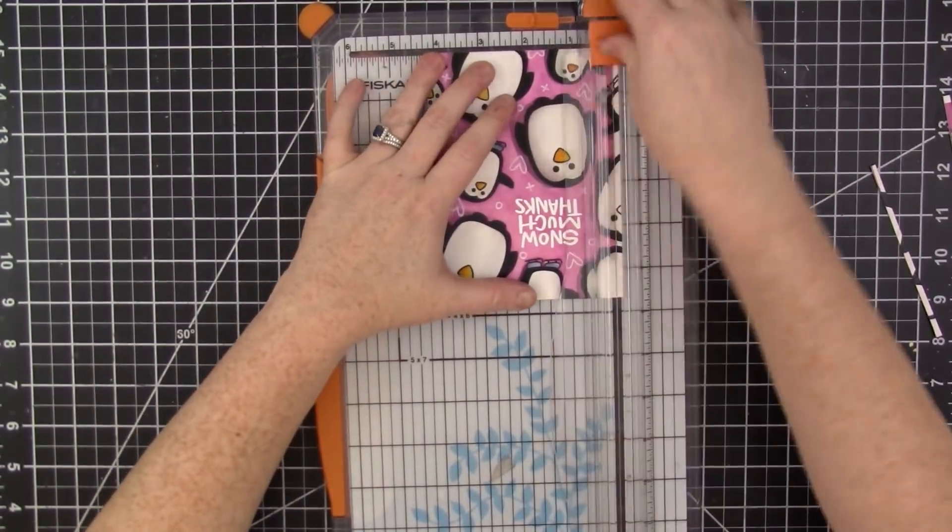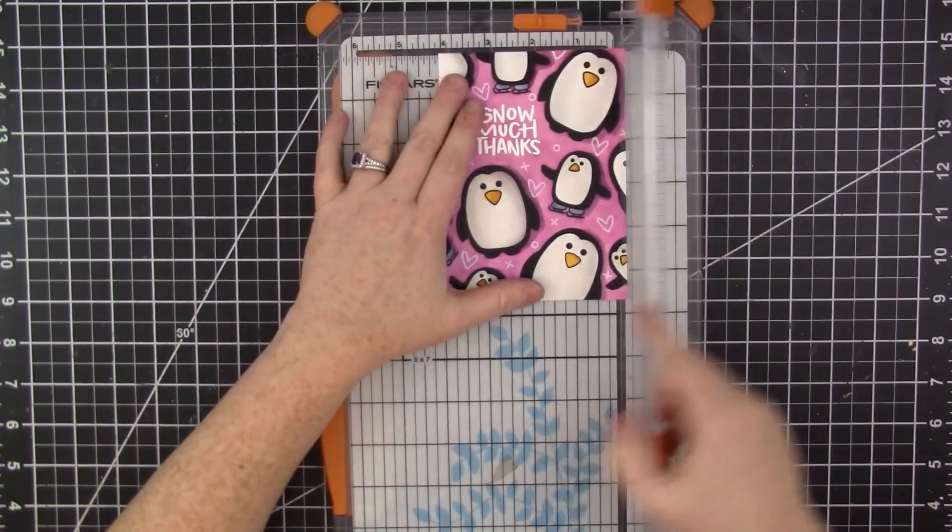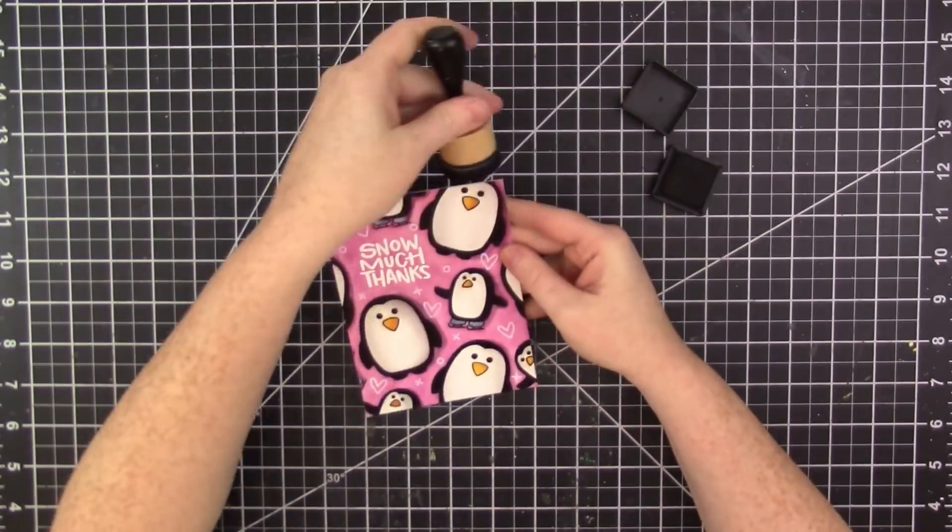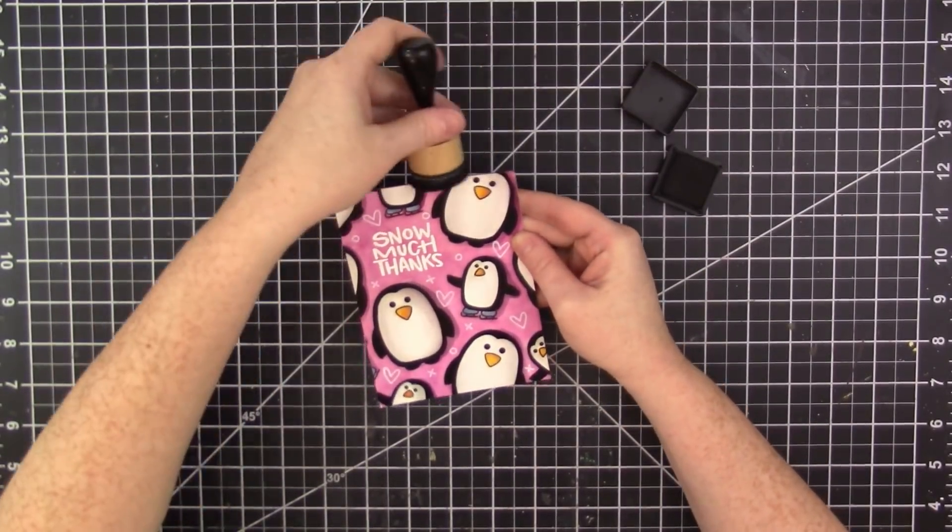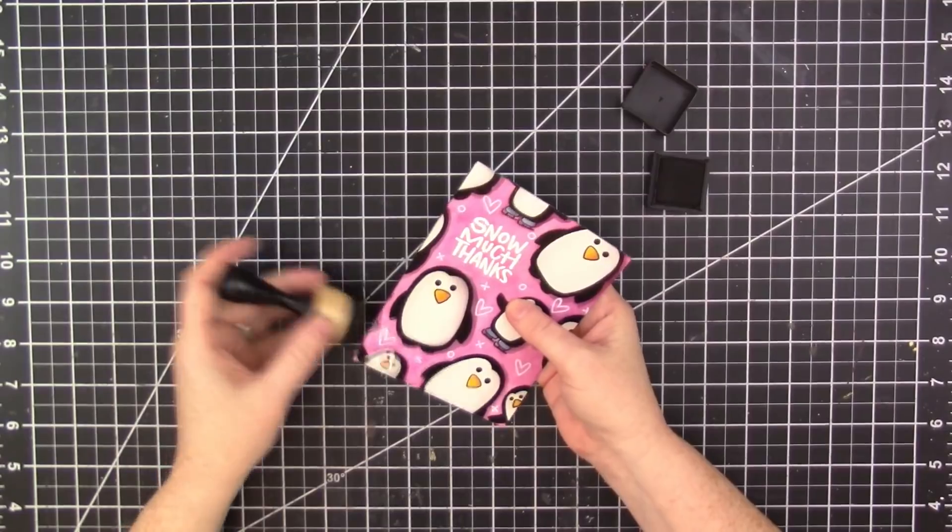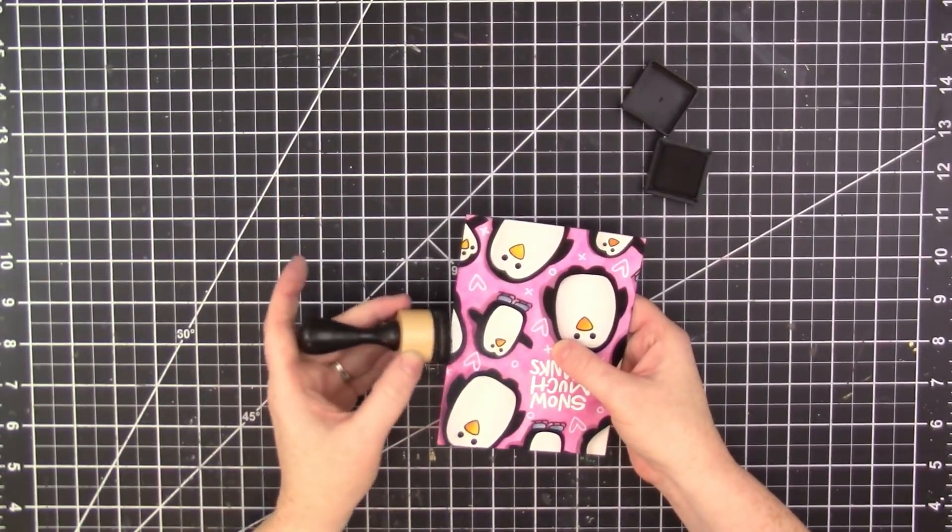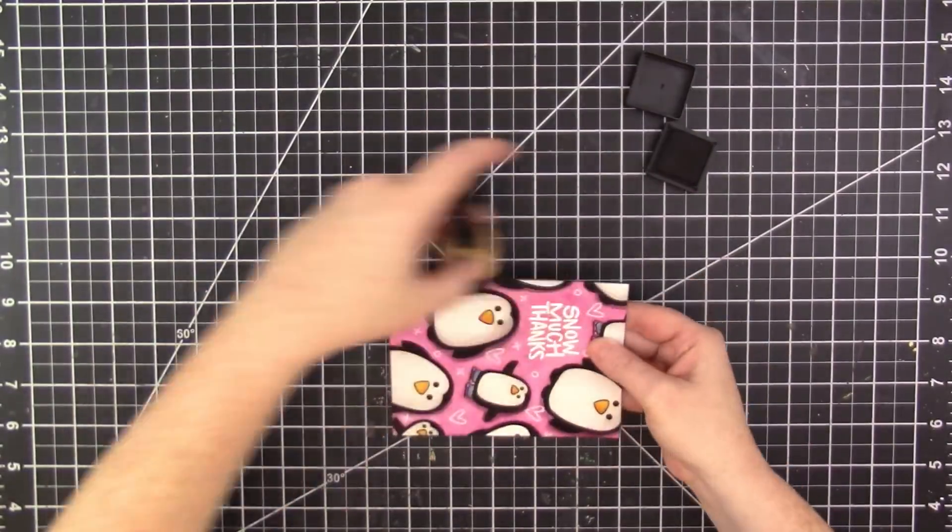Because I'm going to trim off the edges. I cut down the panel to 5 and a quarter by 4 inches with my Fiskars paper trimmer. And then I don't do this with all my cards, but this one just seemed like it really needed it. I went around the edges of the card just really really lightly with Black Soot distress ink and an ink blending tool.